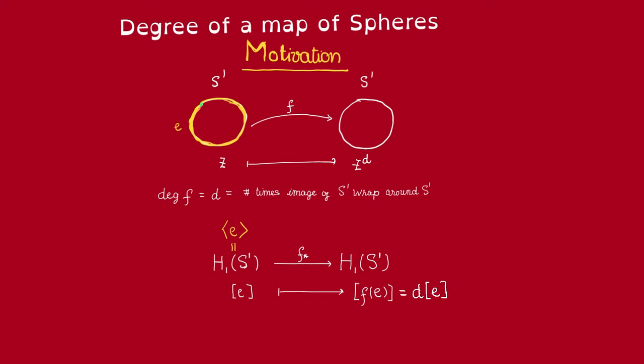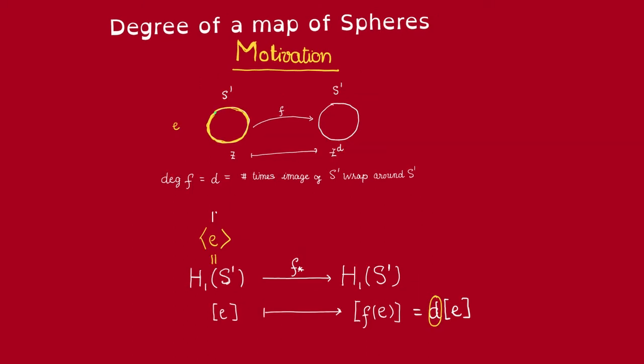This gives us a way to think about this degree. If we think of these homology groups here as isomorphic to ℤ by fixing that generator e, then this is a homomorphism of ℤ. So, it's given by multiplication by a natural number.